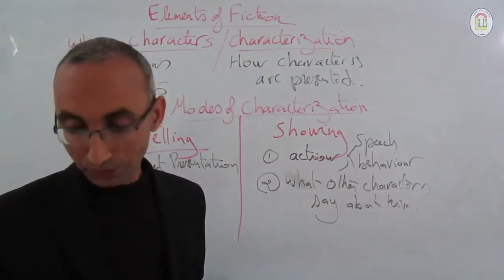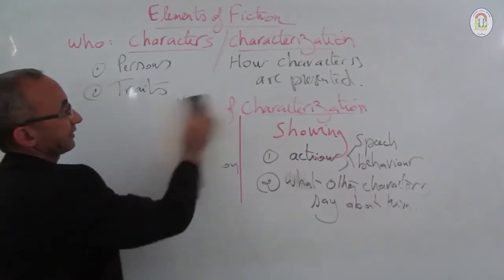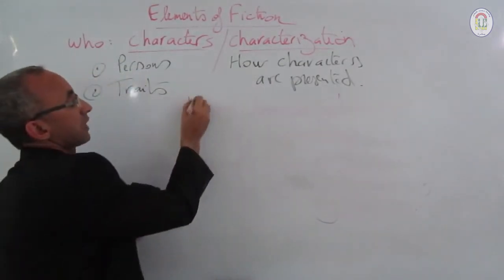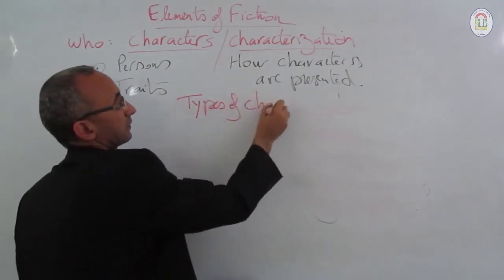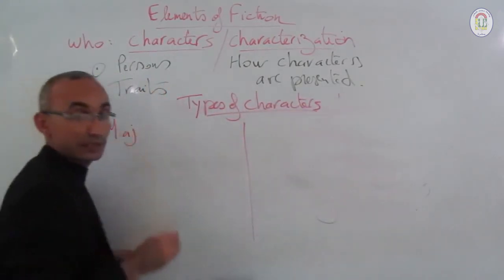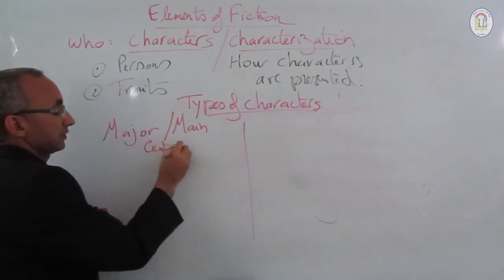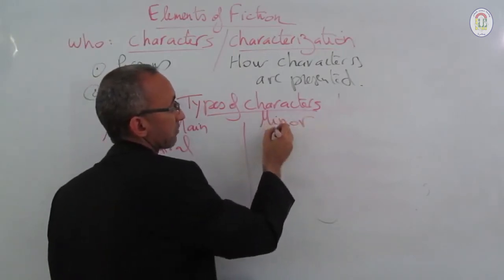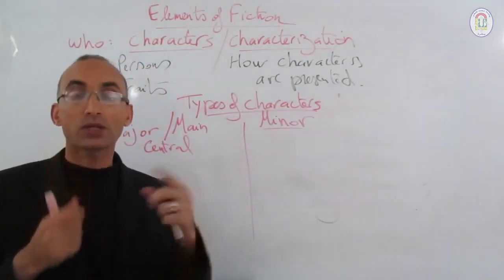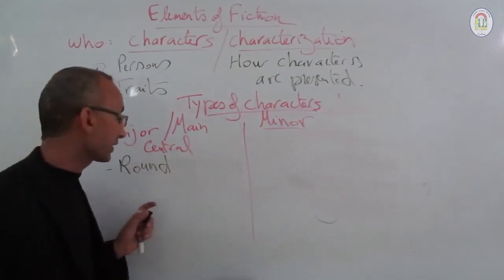Let's write here on the board the two types of characters. We have major characters — also called main or central — and we have minor characters. For major characters, critics also use the term 'round,' and sometimes also 'dynamic.'